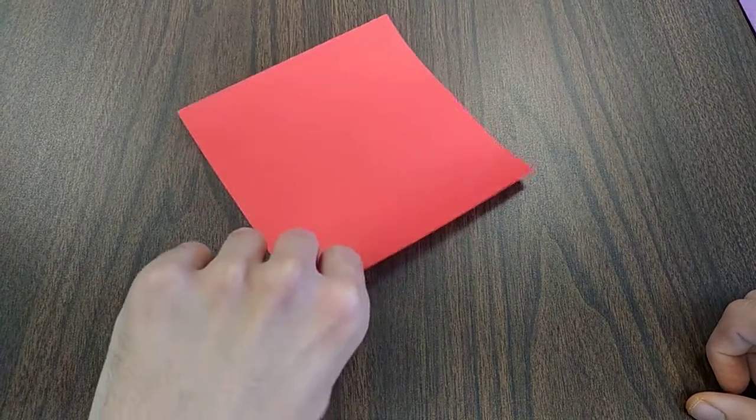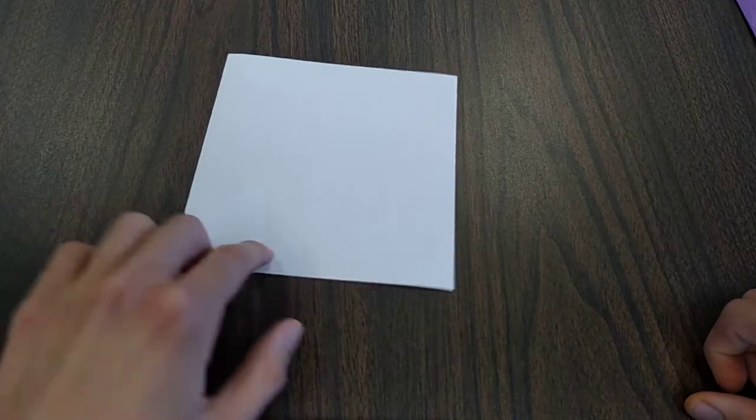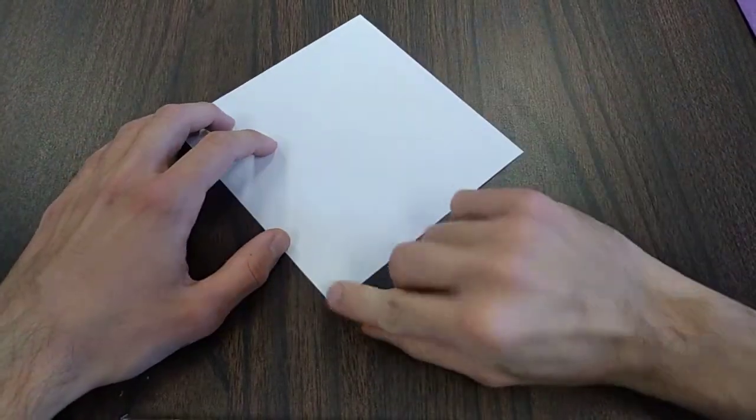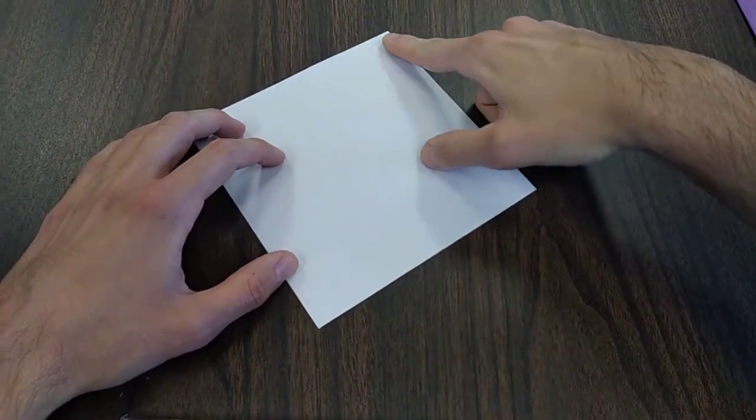So to start, let's flip our paper over so the white side is facing us. Now, let's fold the bottom corner so it meets the top.